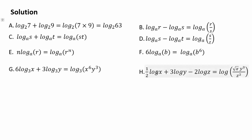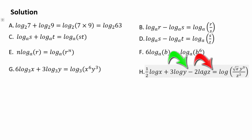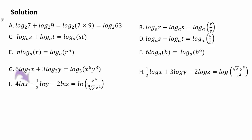In part h: (1/2) log x means x to the power 1/2, which is √x; 3 log y means log(y³); and −2 log z means log(z²) in subtraction, so subtraction means quotient. The result is log(√x · y³ / z²). For part i: 4 is the exponent of x, 1/3 is the exponent of y, it's a subtraction (so division), and 2 is the coefficient of z also in the denominator; cube root means the 1/3 power.